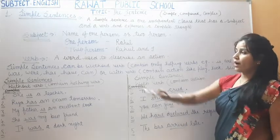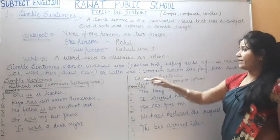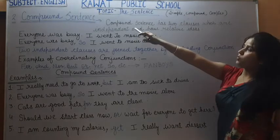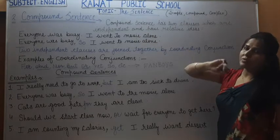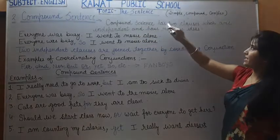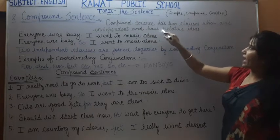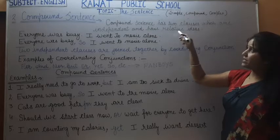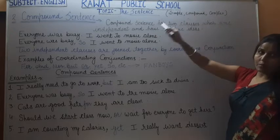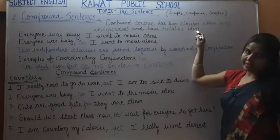I hope you have now understood simple sentences — both without verb and with verb. Now we will understand compound sentences. A compound sentence has two clauses which are independent and have related ideas. जो compound sentence होते हैं उनमें two clauses होते हैं and both clauses are independent and they have relative ideas.